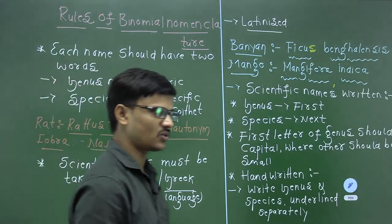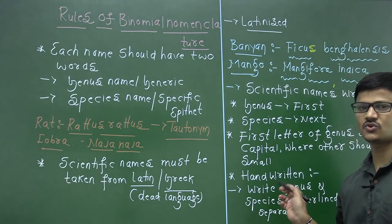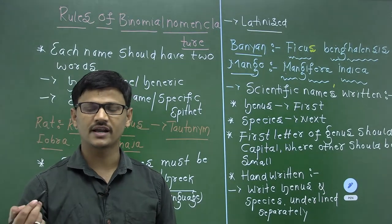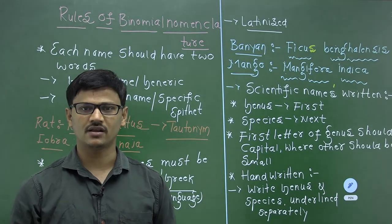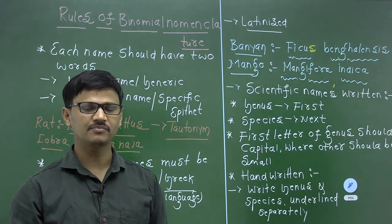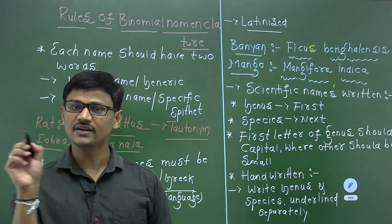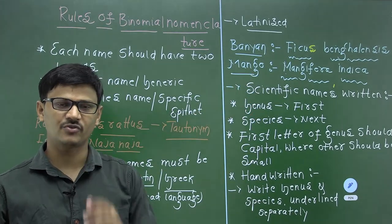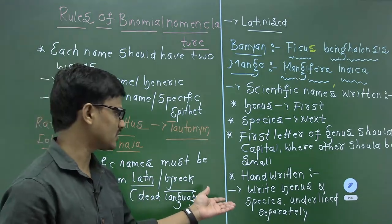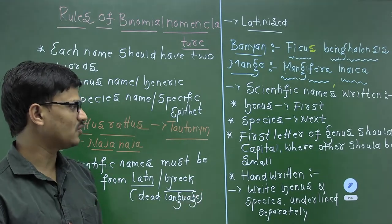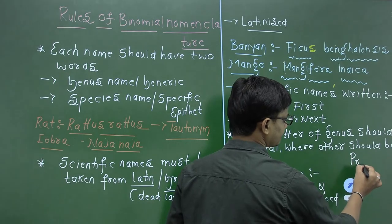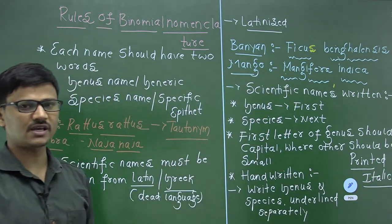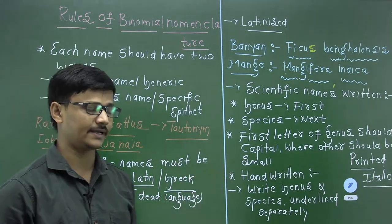This rule is very important — you need to take it seriously as it can affect your biology score, even in practical examinations. Almost all students, when writing scientific names, do not follow this rule. The genus and species names should be underlined separately. When scientific names are printed, they should be in italic font.